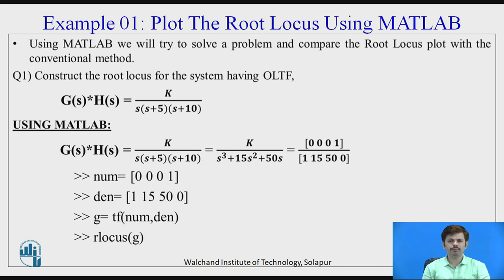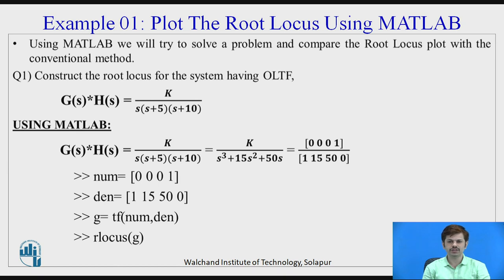We are going to use the command prompt and write: num = [0, 0, 0, 1] representing the numerator, and den = [1, 15, 50, 0] in square brackets representing the denominator. We then define a variable g and call the inbuilt function tf, which represents the transfer function, passing the arguments num and den: g = tf(num, den). Finally, we call the function for plotting the root locus: rlocus(g).